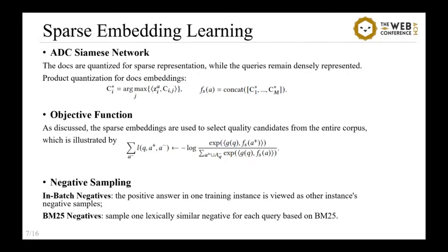Note that the memory-efficient representation is only needed for documents, which cause indexing and in-memory storage. Thus, we adopt the network with asymmetric distance computation. The documents use compact sparse embeddings, while the queries use full dense embeddings. For the training objective, instead of running unsupervised quantization on the dense embeddings, the sparse embeddings are learned for search accuracy. We adopt the InfoNCE loss. For negative sampling, we use in-batch negatives, where positive documents in one training instance serve as negatives for other instances. Besides, we further sample hard negatives for each query based on BM25 score, which is proved to be helpful for document representation.